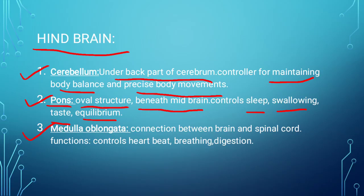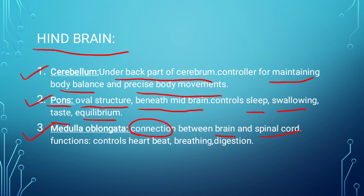Next we have the medulla oblongata. The medulla oblongata is the last part of our brain. After the brain, the second part of the central nervous system, which is the spinal cord, begins. So the medulla oblongata is a connection between the brain and the spinal cord — it connects both of them. Its function is to control digestion and other vital processes. And with that, our topic on the brain is complete.